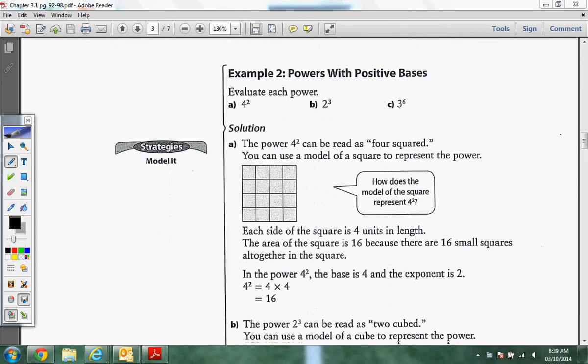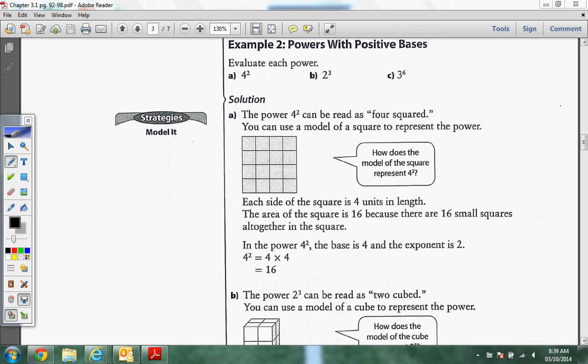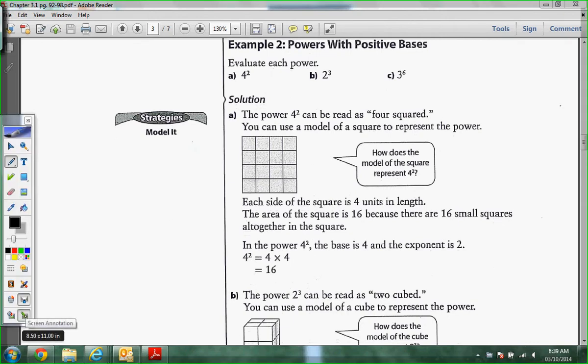Let's move on to the next example here. We're on page 94 now, if you're staying with me. Powers of positive bases. Evaluate each power. Each power of 4 squared. We're trying to find the answer for 4 squared. It would be 16. 2 cubed. That would be 8. 2 times 2 is 4. Times 2 is 8. And then what is 3 to the 6th? 729.